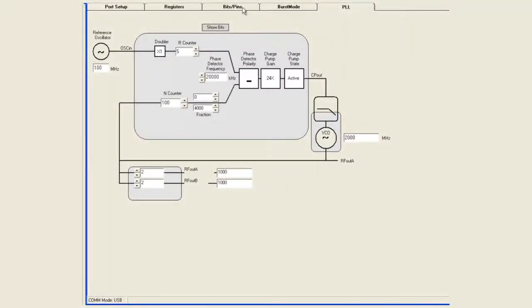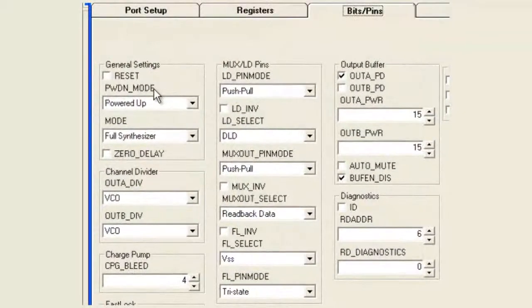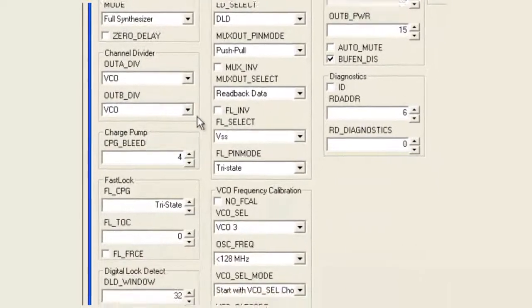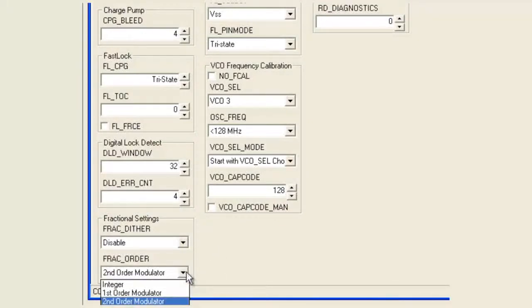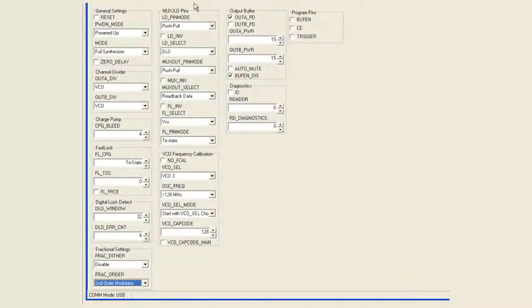If we look into the bits and pins tab here, it gives us insight into some of the features. We have power up and power down modes, different modes, external and internal VCO. We have a channel divider which allows us to get to the lower frequencies. Various settings to optimize the charge pumps for the fractional spurs. Fast lock controls. Fractional settings for the modulator, such as dithering and also programmable modulator order. We have lock detect pin settings and the VCO frequency calibration settings.